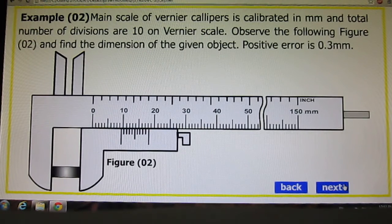Let us see example number 2. We have to measure the dimension of this object. Remember, here positive error is 0.3mm. Let us calculate.